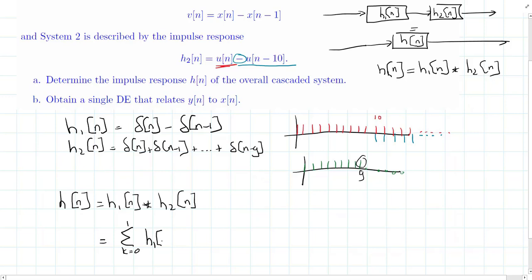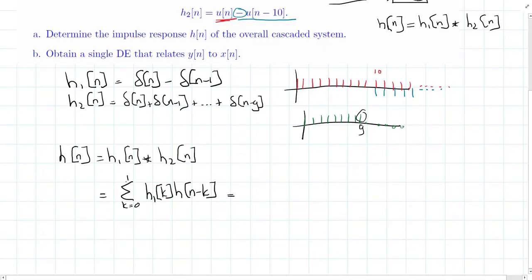since our impulse response of h1 exists only out of two inputs. So we have h1k, multiplied with h2, n minus k. And if we were to write this out, I'll write the case that k is equal to zero in red. So we have h1 zero, h2, n minus zero. And the case that k is equal to one, I'll write in green. So we have h1 one, h2, n minus one.